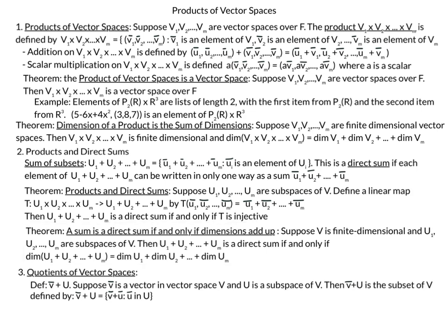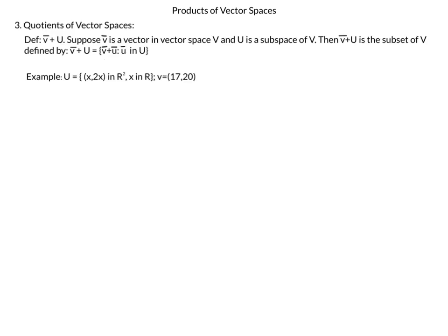For our final topic, we introduce quotients of vector spaces — the topic of our next video — with just one definition. Suppose we have a vector V in the vector space V and U a subspace of that same space V. Then V plus U is a subset of V defined as V plus u for all vectors u in the subspace U. Let's look at an example: let U be the subspace {(x, 2x)} in R2, and let our vector V be (17, 20).